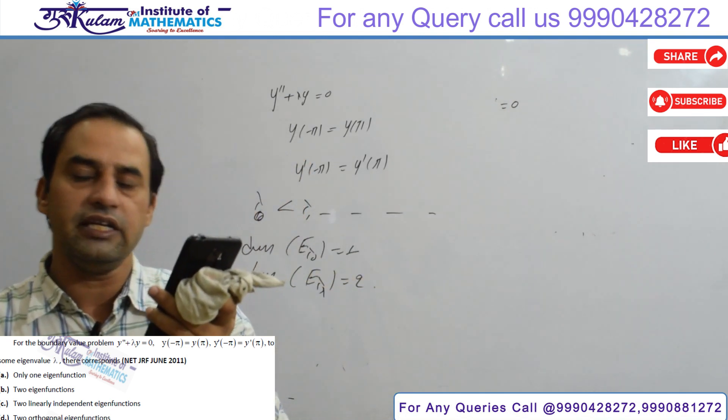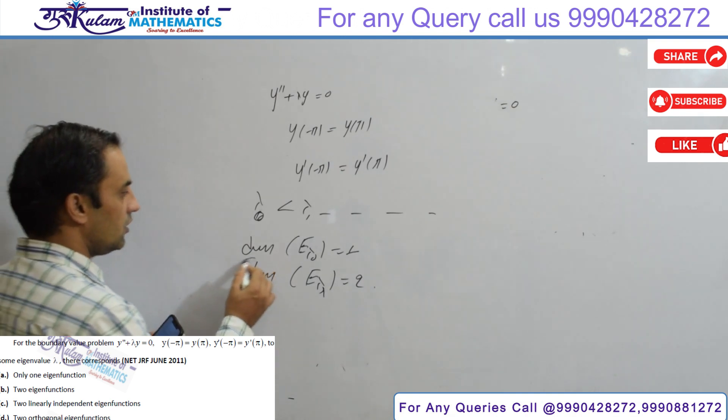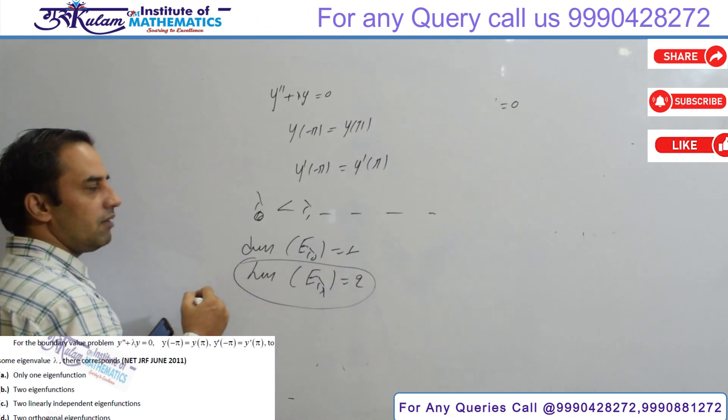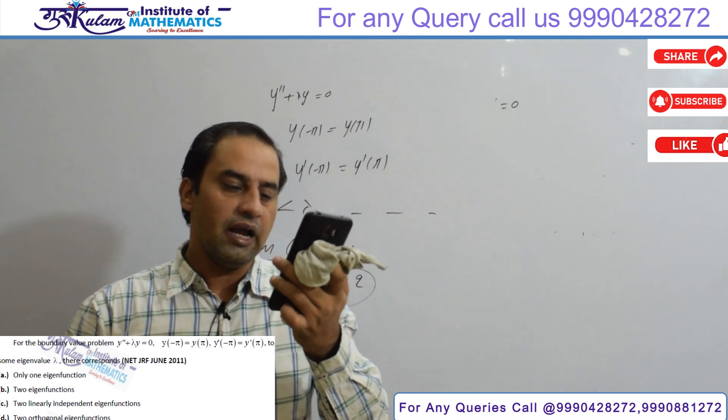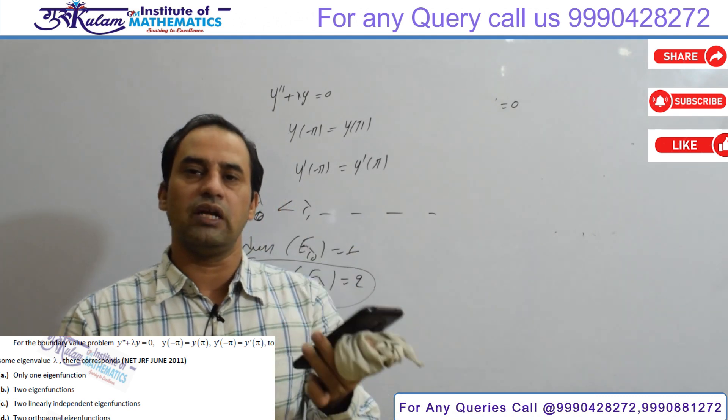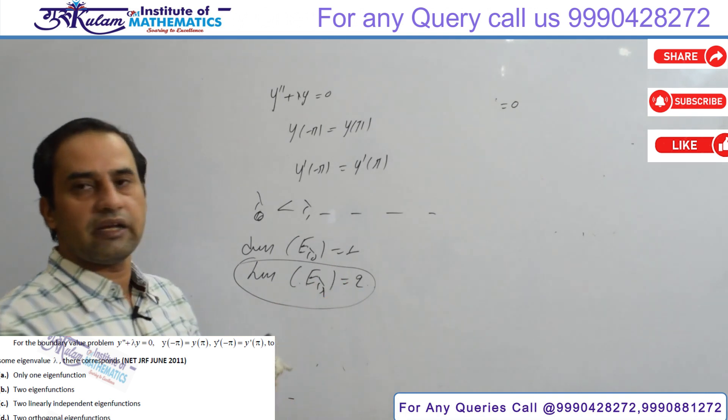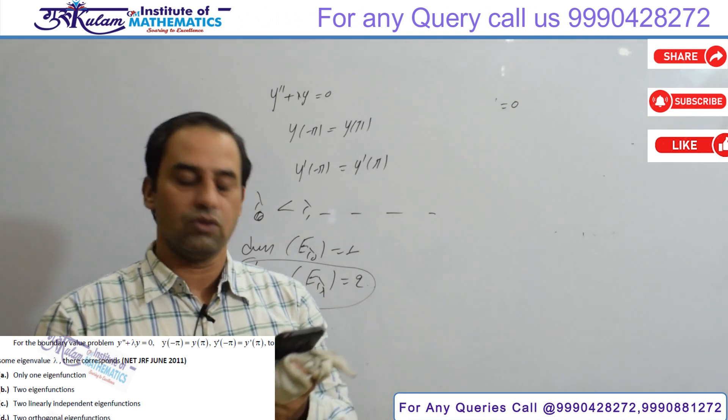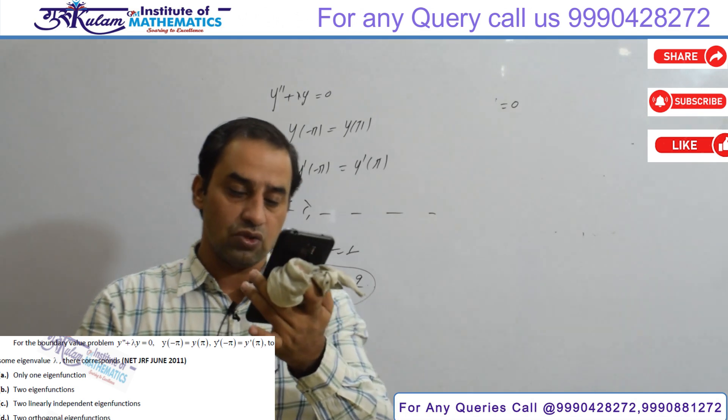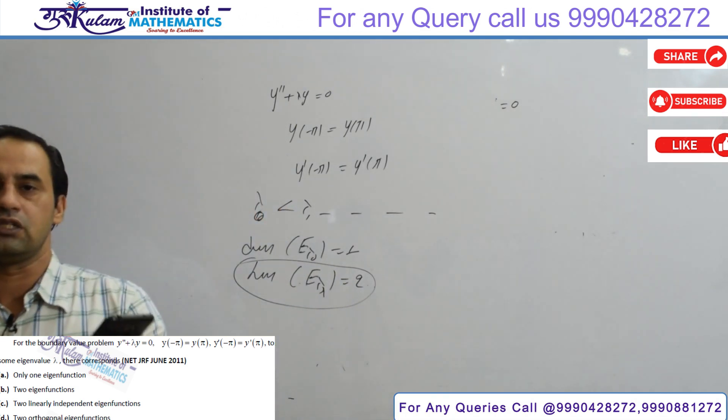Third is two linearly independent eigenfunctions. So lambda two, lambda three, lambda four, here we have two linearly independent eigenfunctions and two orthogonal eigenfunctions. Eigenvalue corresponding two-dimensional eigenspace, then eigenfunctions are orthogonal. So directly in general theory, C and D are true, remaining all are false.